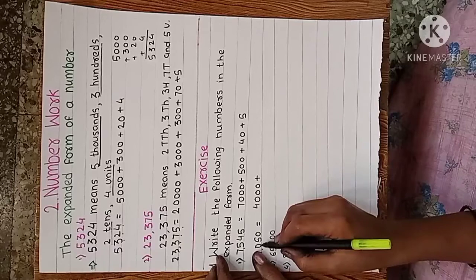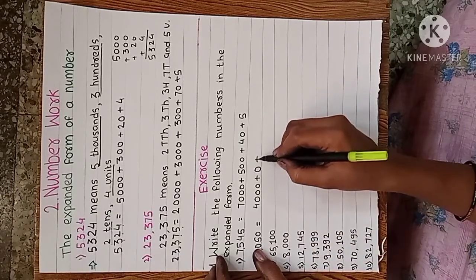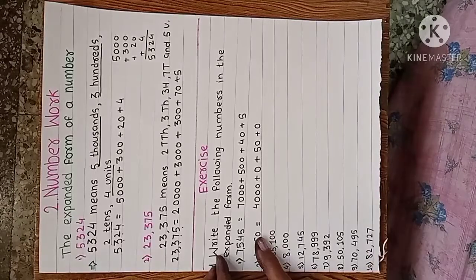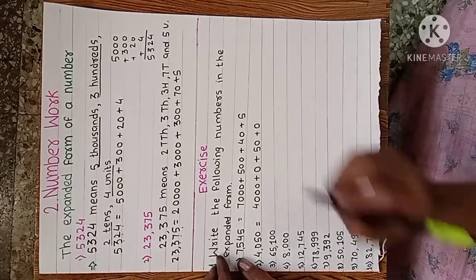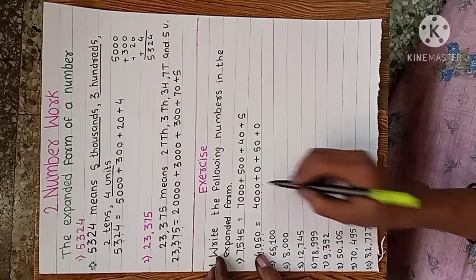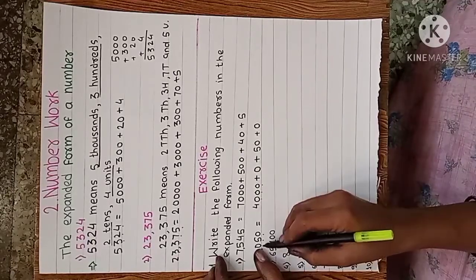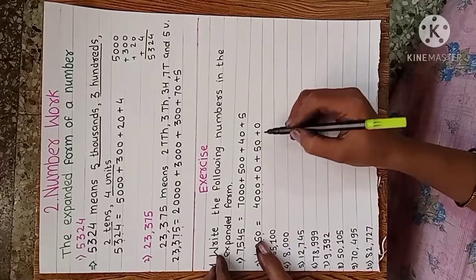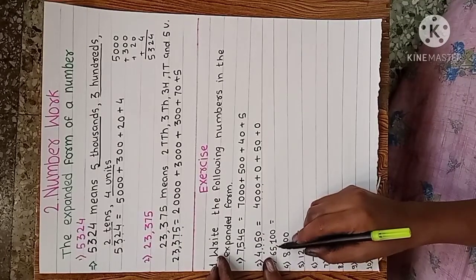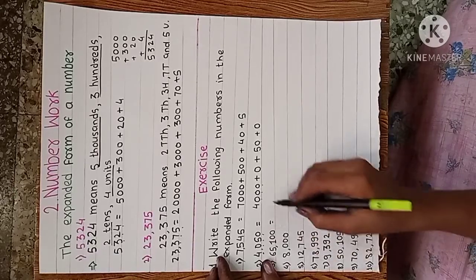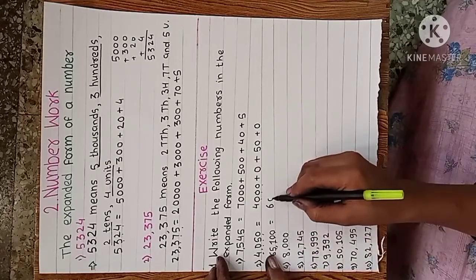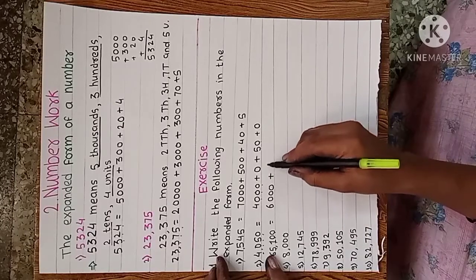Four thousand and fifty: at the hundreds place there is zero, therefore we write zero here. Four thousand and fifty — four thousand plus zero hundreds plus fifty plus zero units. See here: four — how many digits after four? One, two, three — write down three zeros after the four. Then zero, then five — after five, one digit — write one zero. Next: sixty five thousand one hundred — the expanded form: sixty thousand — how many digits after six? One, two, three, four — write four zeros. Then five — one, two, three — three zeros.